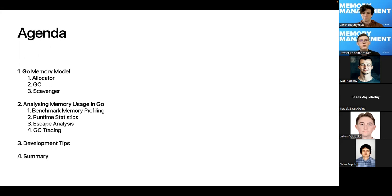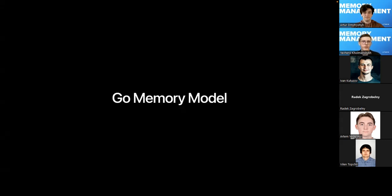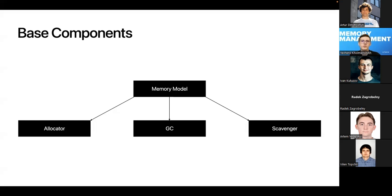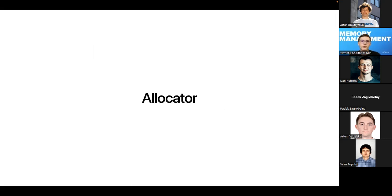Let's start with the Go memory model. It has three base components for working with memory allocation: the allocator, the garbage collector, and the scavenger. Let's consider each one to understand better how they work and help us use OS memory when we initialize new objects.